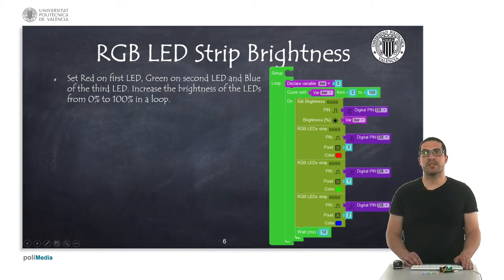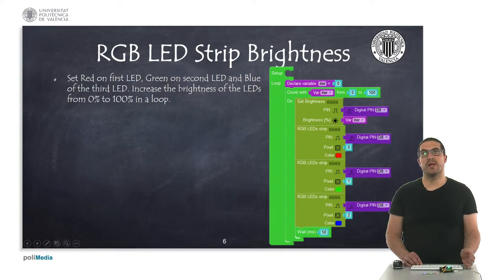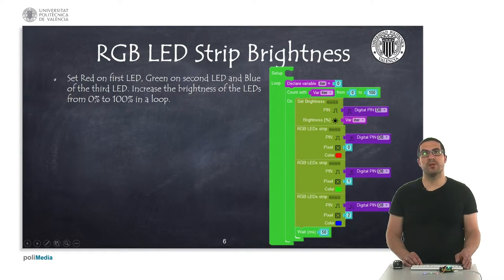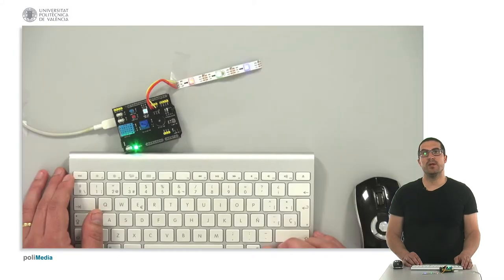In this second example, I'm going to show you how to regulate the light intensity of the RGB LED strips, and here we're using the appropriate instruction in Facilino to regulate the brightness. Let's switch to the overhead camera to see how it works.